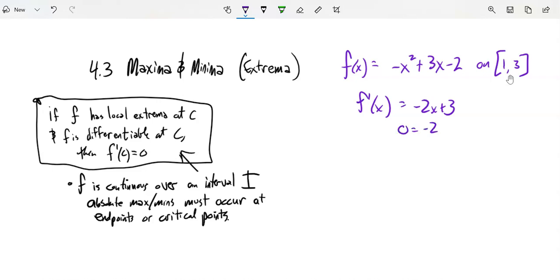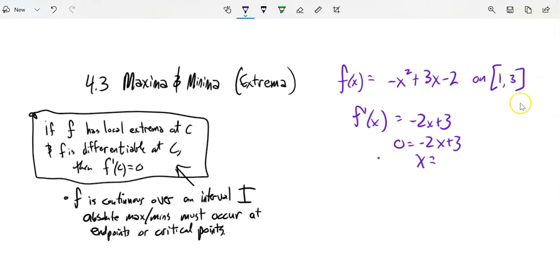So that would be at 3 halves. So that's the only place at zero. It's always defined. It's not undefined anywhere. Like, I'm not dividing by zero. I don't have that opportunity or square root of a negative. So there's my critical point. And my other possibilities are my endpoints. My endpoints are when X is 1 or X is 3.